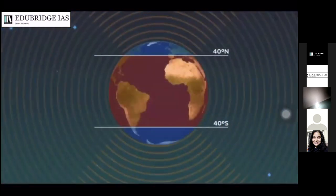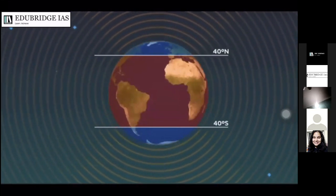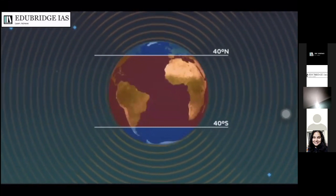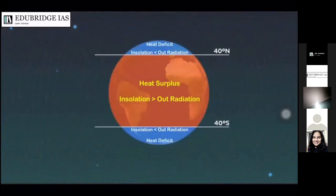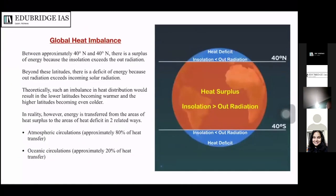In fact, the global radiation balance is such that polewards of the 40 degree latitude, the outgoing heat radiation from the earth exceeds the incoming heat radiation from the sun. Global circulation acts as a clever air conditioning system to redistribute the heat, stopping the equator from becoming hotter and hotter and the poles from becoming colder and colder. Energy is transferred from areas of heat surplus to areas of heat deficit in two ways: atmospheric circulations, which account for approximately 80% of heat transfer, and oceanic circulation — the ocean currents — which account for approximately 20% of heat transfer.